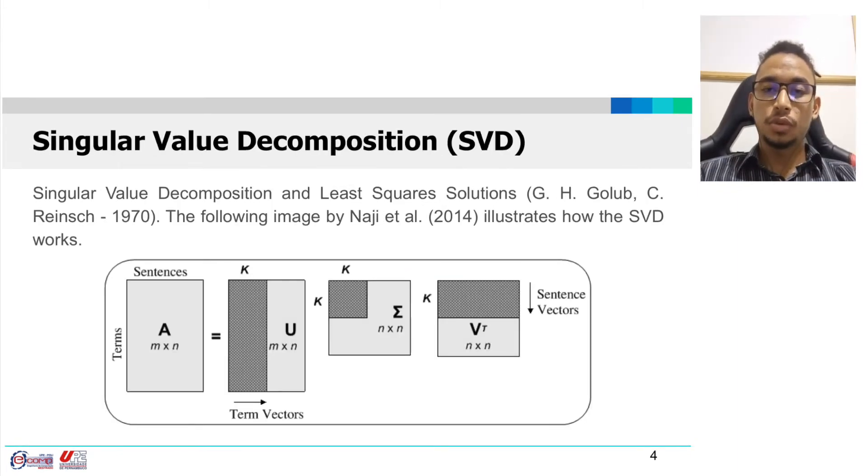Another famous solution is the SVD. The singular value decomposition is a factorization of a matrix that generalizes the eigendecomposition of a squared normal matrix to an M by N matrix via an extension of the polar decomposition.